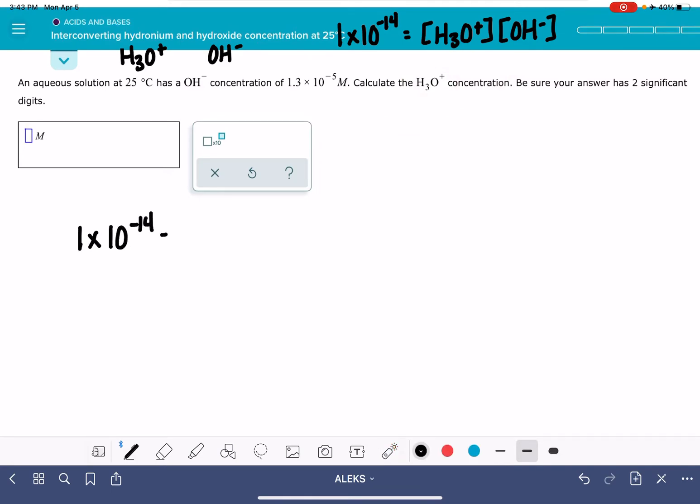1 times 10 to the minus 14 is going to be the H3O plus concentration times the OH minus concentration, which the problem tells us is 1.3 times 10 to the minus 5.